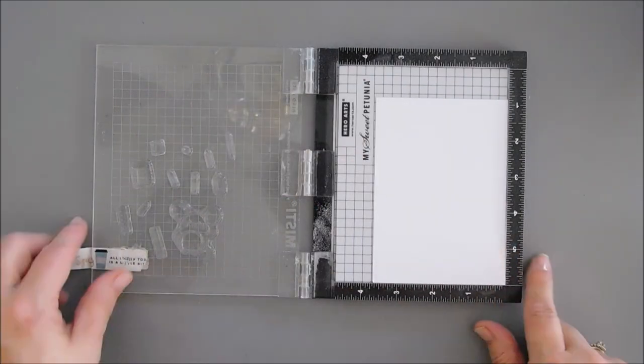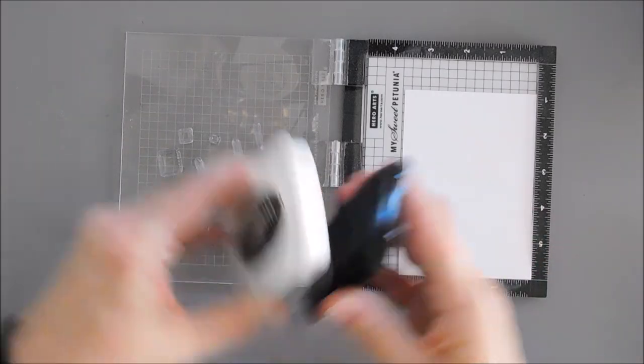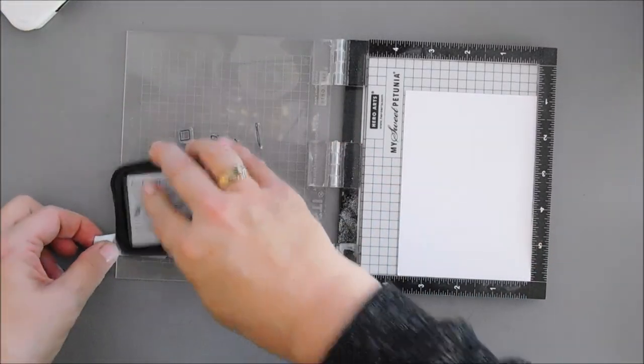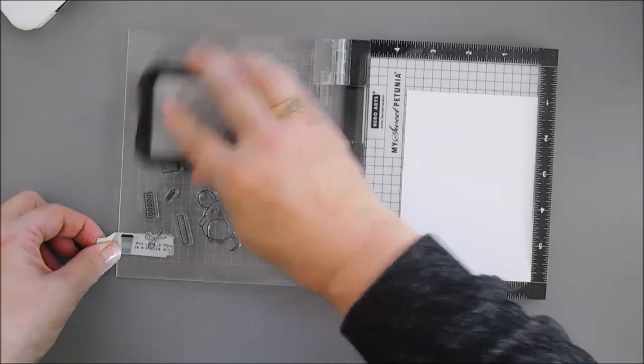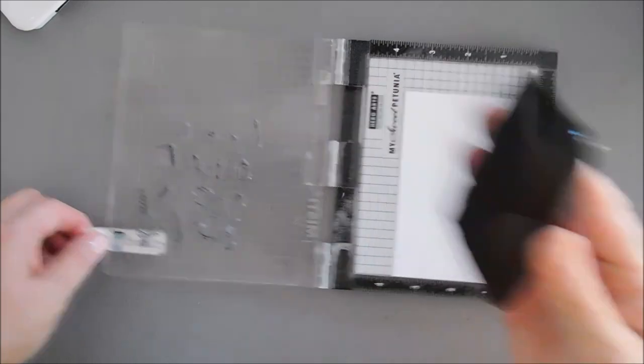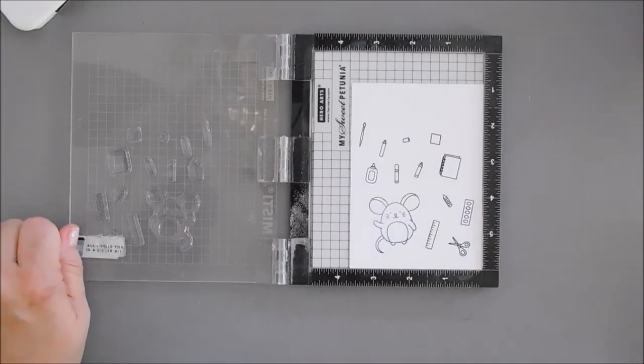Since we're coloring with Copic markers, I'm going to break out my Memento Tuxedo Black ink. That's my go-to ink whenever I do alcohol marker coloring. And it dries really fast too. That's why I like the colored inks too. But I'll stamp my images.